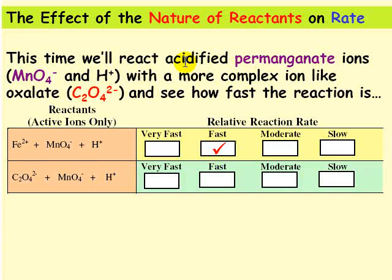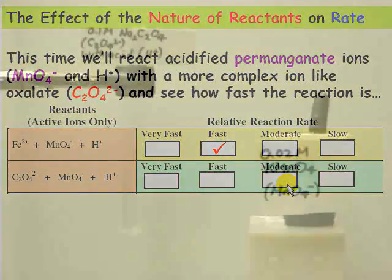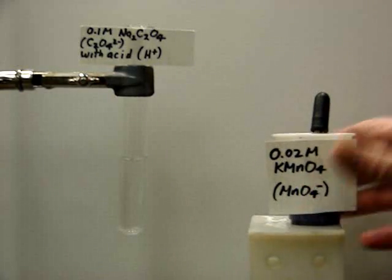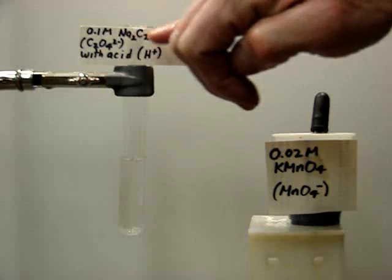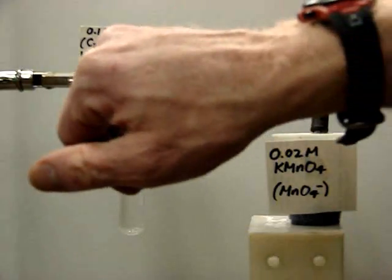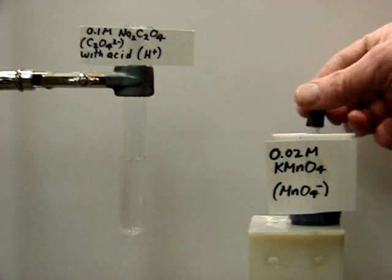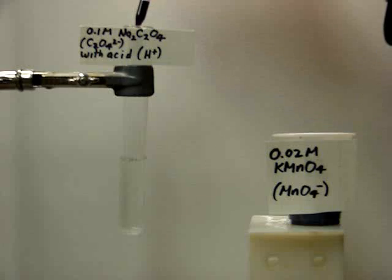Now we're going to add the acidified permanganate, the MnO4- and H+, to a more complex ion. This ion is the oxalate ion, C2O4^2-. And we'll see how fast that reaction is. Now we're going to add some of the purple KMnO4 to a solution of sodium oxalate, Na2C2O4. This is the source of the oxalate ion, C2O4^2-. This has also been acidified. Let's put in five drops of the KMnO4.